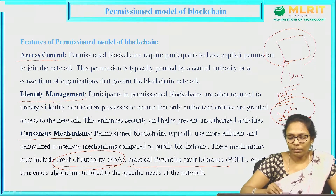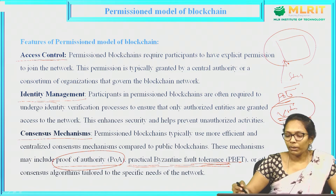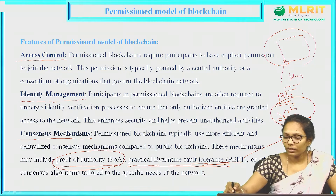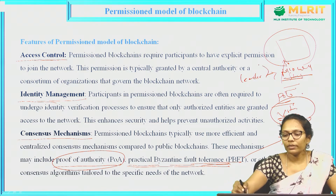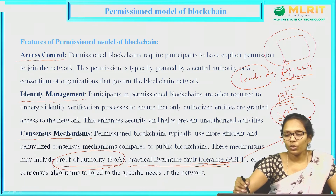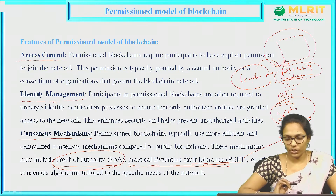Coming to practical Byzantine fault tolerance — here we have a leader and the remaining are followers. The leader is elected randomly, and whatever the leader decides, the followers need to follow that process. Taking the college process as an example, the principal is selected as the centralized person who has the complete right to make decisions.